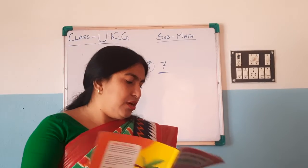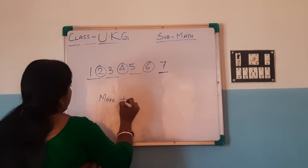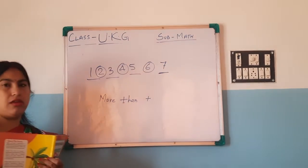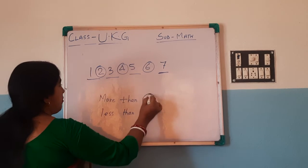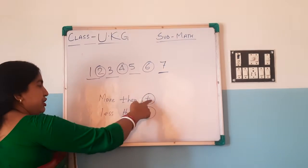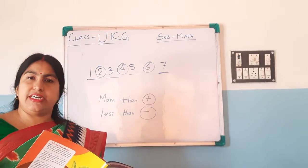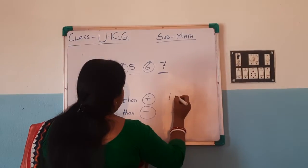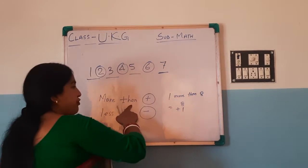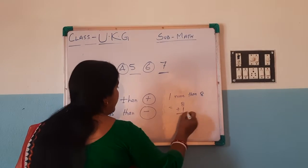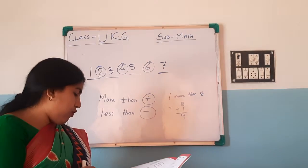Turn to the next page. 'More than' means you have to add — more than means addition. And 'less than' means subtraction. You should memorize this: more than means addition, and less than means subtraction. So, one more than eight — just add one to eight. One more than eight is equal to eight plus one, which is nine. And less than means subtraction.